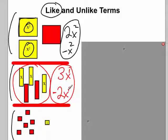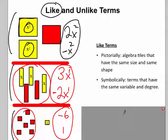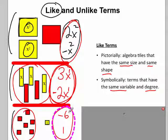And finally I have the number chips. I have six negatives and one positive. And these are also like terms. So like terms, just to emphasize again, in terms of algebra tiles, they are tiles that have the same size and shape. And in terms of the algebraic terms themselves, they are terms that have the same variable and the same degree. So the degree twos go together of one variable, the degree ones go together of one variable, and the numbers, the constants, have no variable. They're degree zero. They go together as like terms.